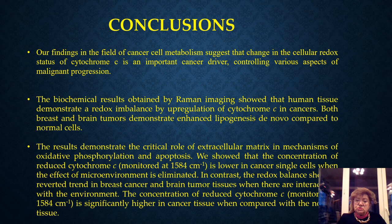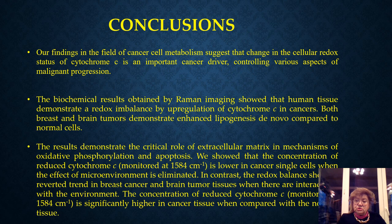The results demonstrate the critical role of the extracellular matrix in the mechanism of oxidative phosphorylation and apoptosis. We showed that the concentration of reduced cytochrome monitored by the band at 1584 cm⁻¹ is lower in cancer single cells when the effect of the microenvironment is eliminated. In contrast, the redox balance shows a reverted trend in breast cancer and brain tumor tissues when there is interaction with the environment — in this case the concentration of reduced cytochrome is significantly higher in cancer tissue compared to normal tissue.